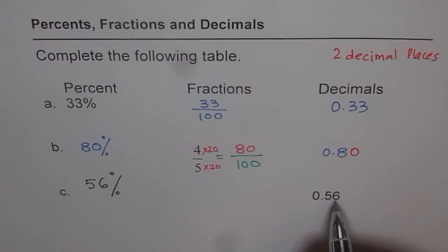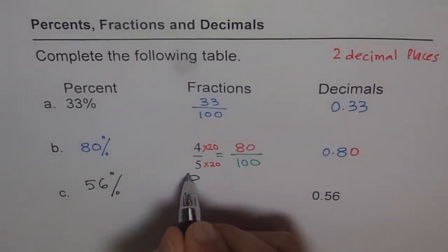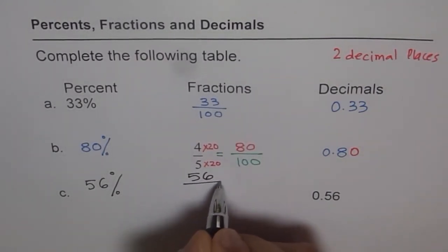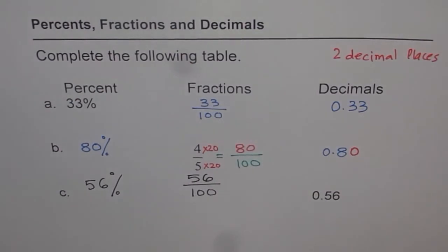As far as fractions are concerned, we can always write this as 56 over 100. So let me write this as 56 over 100. That is the fraction equivalent of 0.56.